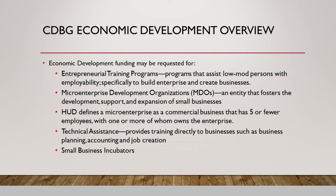Now we will talk about CDBG economic development. Economic development funding may be requested for entrepreneurial training programs — programs that assist low to moderate income persons with employability specifically to build enterprises and create businesses. They also go towards micro enterprise development organizations, which are entities that foster the development, support, and expansion of small businesses. HUD defines a micro enterprise as a commercial business that has five or fewer employees, one or more of whom owns the enterprise. Funding can also be spent towards technical assistance as well as small business incubators.